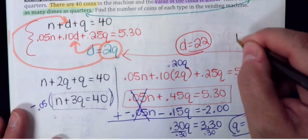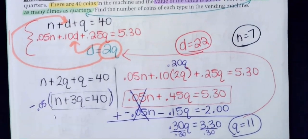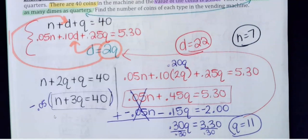For word problems, don't write the answer as an ordered triple — just state each variable. We have 7 nickels, 22 dimes, and 11 quarters. We'll continue working with this type of problem.